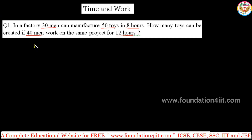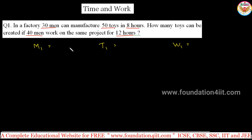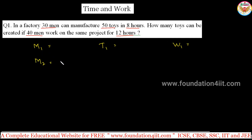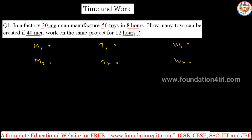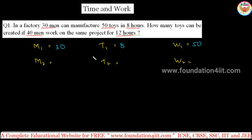From the first line, just make the statement like M1, T1, W1 — taking men, time, and work. Work here is the number of toys, even manufacturing, whatever it is, just make it as one unit. From the second line, you can take M2, T2, and W2. I will give the formula to apply. So, 30 men work 8 hours and they are making 50 toys is the first line. How many toys? That will be x.